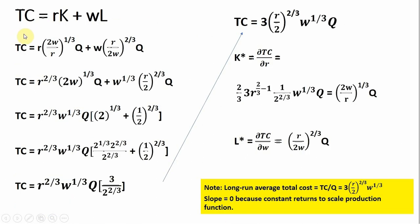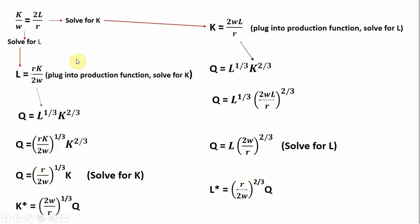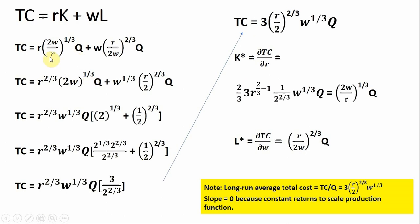Next, I want to take the firm's total cost — which is just R times K, the price of capital times the units of capital, plus the wage times the units of labor — and we're going to substitute in our conditional input demands. For K, we're going to plug in this result, and for L, we're going to plug in this result. After making our substitutions, we have this expression.